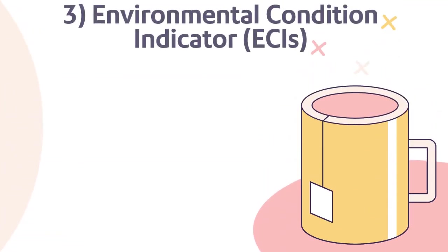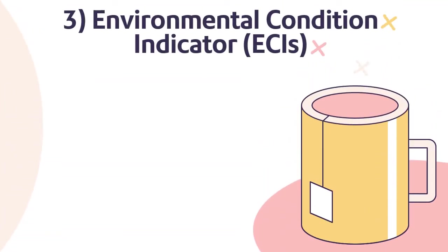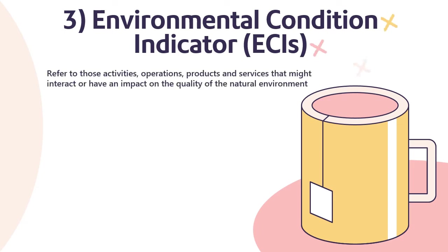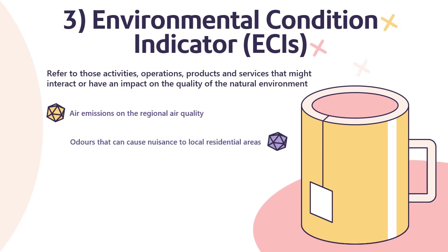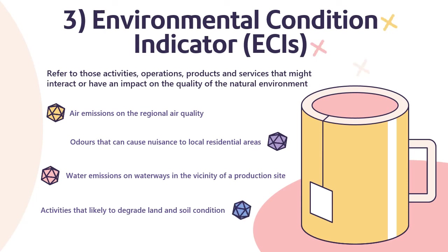Environmental Condition Indicators (ECI) refer to those activities, operations, products, and services that might interact with or have an impact on the quality of the natural environment — such as air emissions affecting regional air quality or causing nuisance to local residential areas, water emissions affecting waterways in the vicinity of a production site, and activities likely to degrade land and soil conditions.